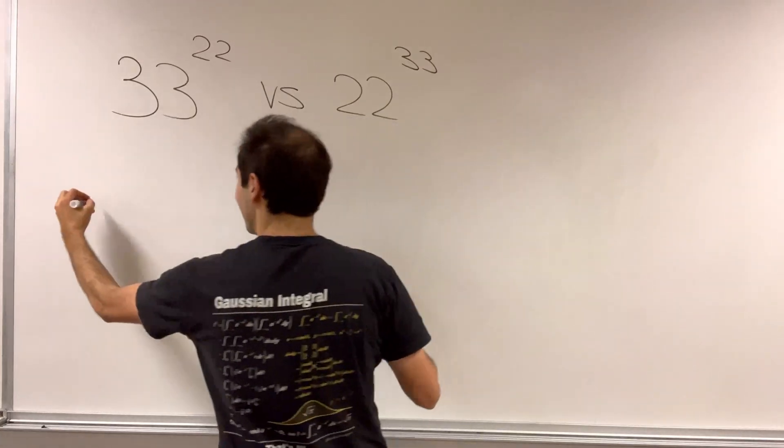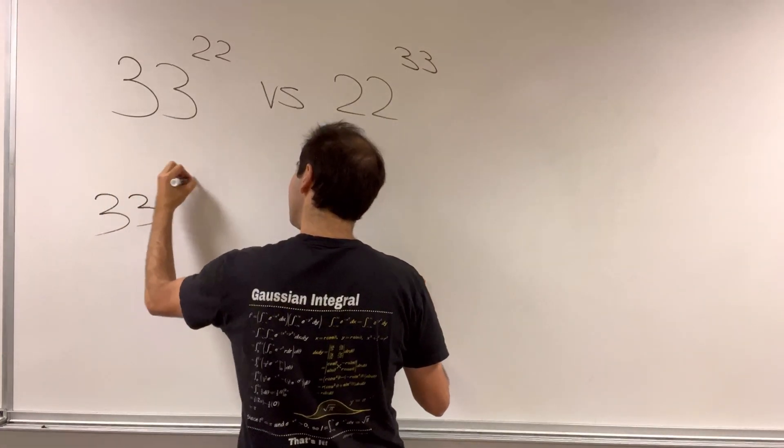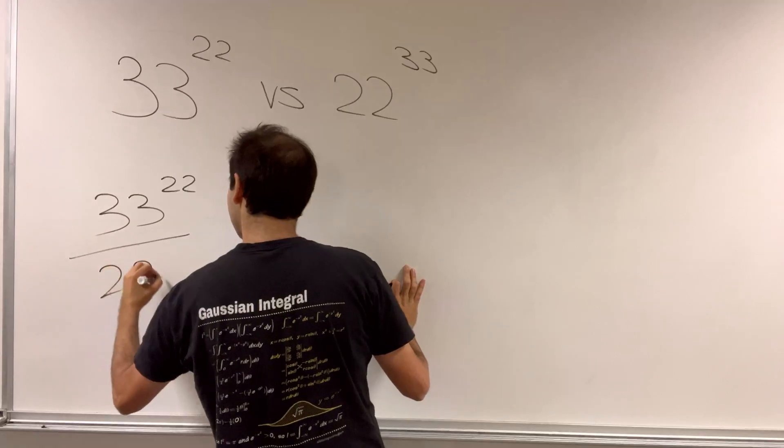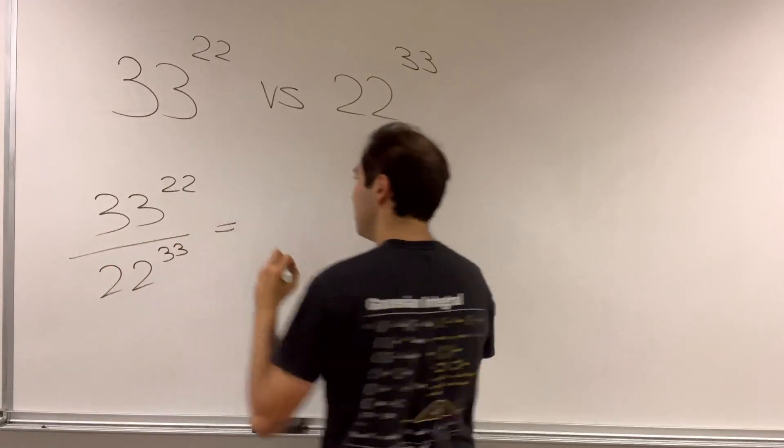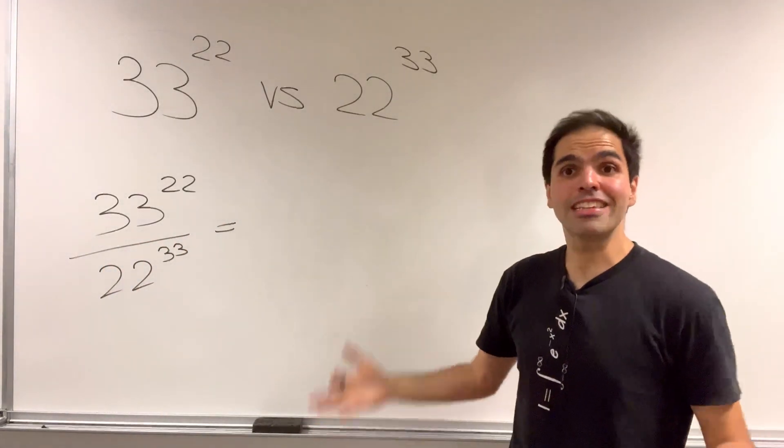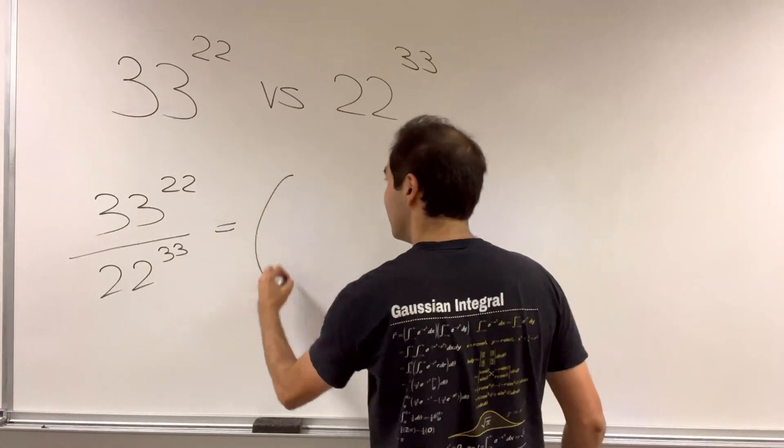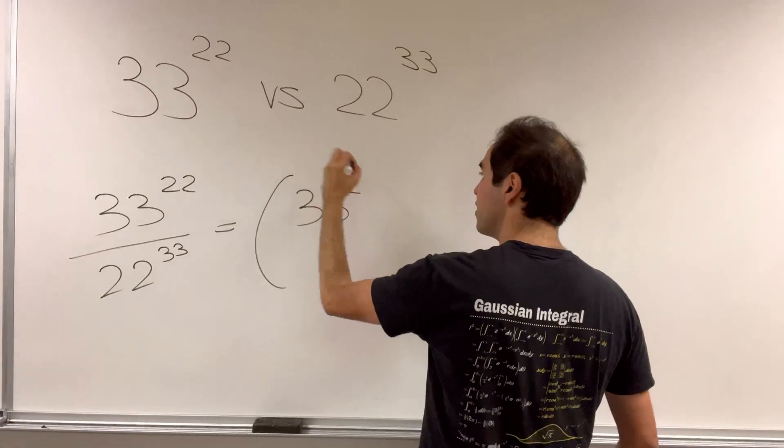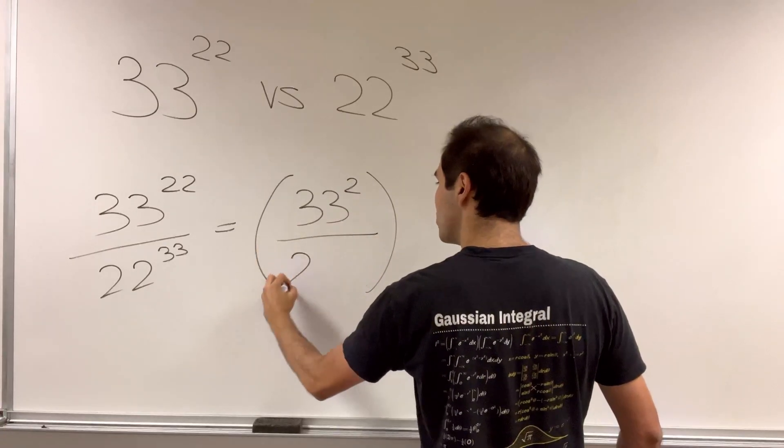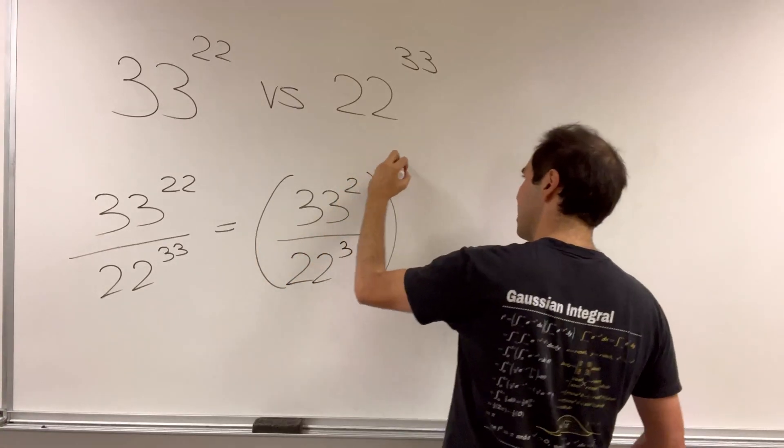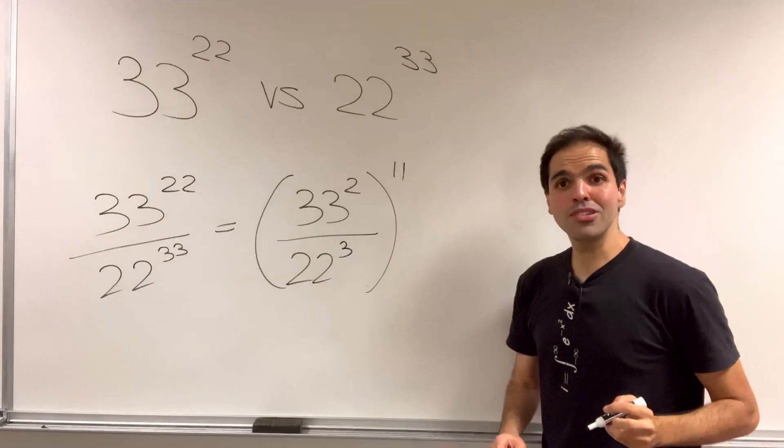Consider the ratio 33 to the 22 over 22 to the 33. Notice they can be rewritten as a power of 11, because this is 33 squared to the 11 over 22 cubed to the 11.